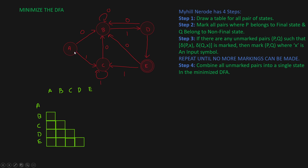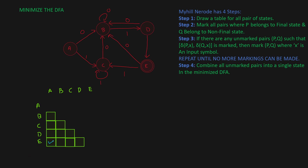For pair EA, E is a final state and A is a non-final state, so you have to mark it. Similarly EB — E is a final state, B is a non-final state, so mark it. EC and ED as well — one is a final state, one is a non-final state. So all four pairs EA, EB, EC, ED are marked. You have now marked all pairs where P belongs to a final state and Q belongs to a non-final state.